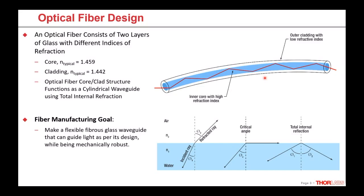The index difference in fiber is typically pretty low compared to something like water and air, which was probably the classic physics 101 example of total internal reflection. Because of that, the critical angle — the shallowest angle where total internal reflection can occur — is pretty shallow in a fiber. That said, the fiber with this design is able to function as a waveguide. The whole goal is to create this flexible fibrous glass waveguide that can guide light as per the design while being mechanically robust — it can be handled, bent, and exist in the real world without damage.